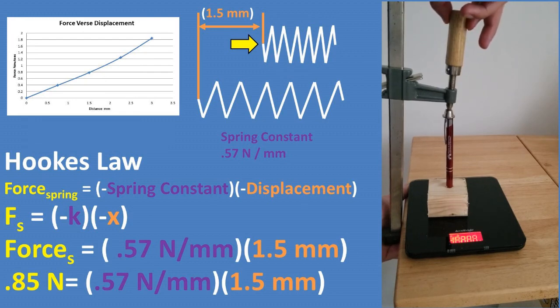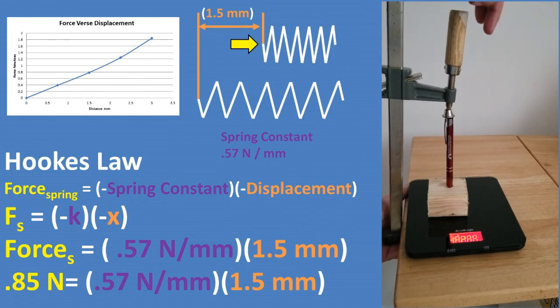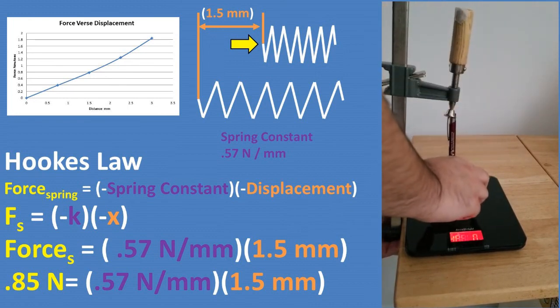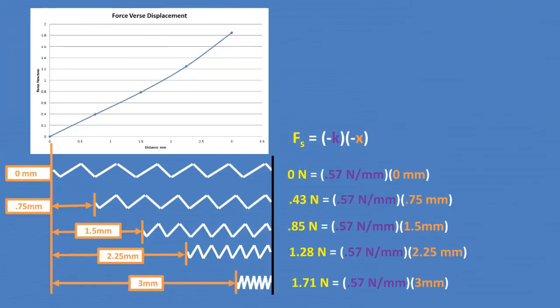Now to solve for our theoretical force after being compressed 1.5 millimeters, we plug in our spring constant of 0.57 newtons per millimeter compressed and our displacement of 1.5 millimeters into the formula. We are left with a force of 0.85 newtons. So now looking at the graph and looking at the equation, we can see that the trend for the force versus displacement is for the graph to go up linearly at a constant rate.